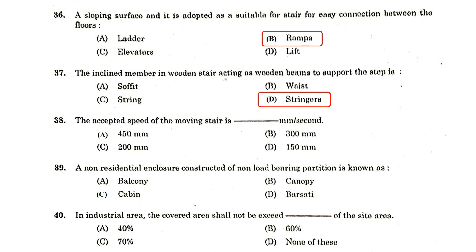The accepted speed of a moving stair is 450 mm per second. A non-residential enclosure constructed of a non-load-bearing partition is known as a cabin. In an industrial area, the covered area shall not exceed 60 percent of the site area.